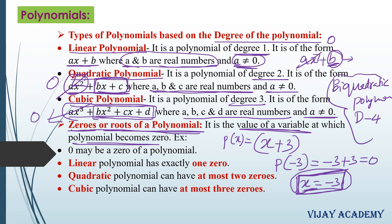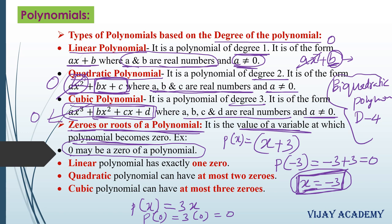Also, 0 may be a zero of a polynomial. For example, for the polynomial 3x, the value x equals 0 makes it 0 — because 3 times 0 equals 0. Therefore x equals 0 is the zero of this polynomial.